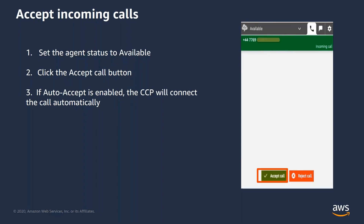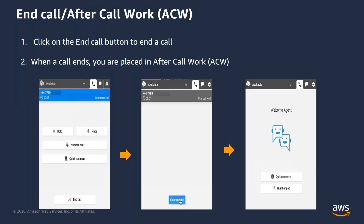Based on your contact center configurations, you may hear the name of the queue the call came in from before you connect to the customer. At the end of your interactions, you can end your call by simply clicking on the end call button. At the end of every contact, you are immediately placed in an after call work mode. This allows you to complete any pending activities pertaining to that call. Once done, you can clear contact and go back to the available state again to receive more calls.